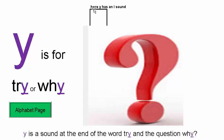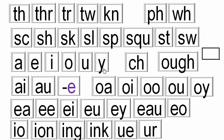Here, Y has an I sound. Y is for TRY or WHY. It's a question, isn't it? Y is the sound at the end of the word TRY, and the question WHY. Sometimes Y has a Y sound, but here it's I — try. So Y is a consonant as well as a vowel.